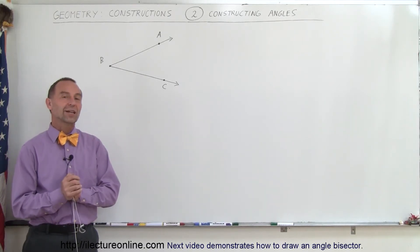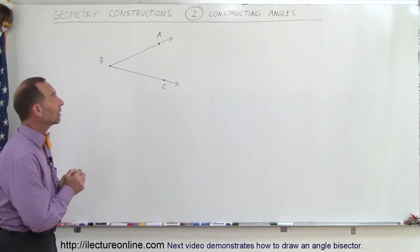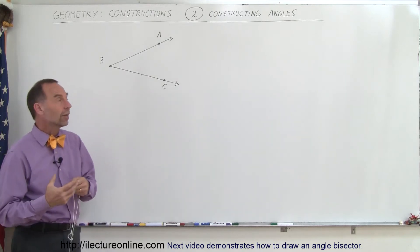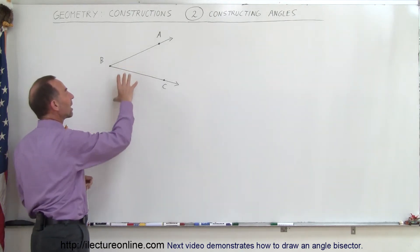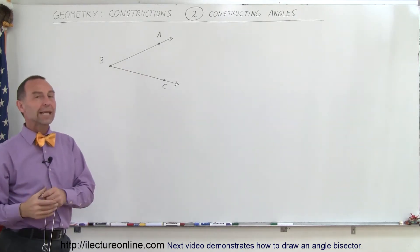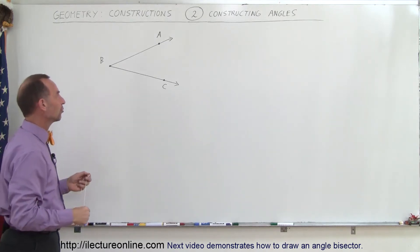Welcome to ElectronLine and here our second construct we're going to make is angles. We're going to construct an angle based upon an existing angle. We want to draw a congruent angle, the exact same measure.